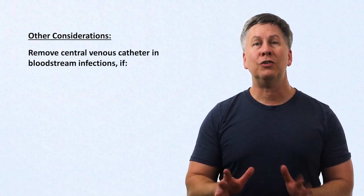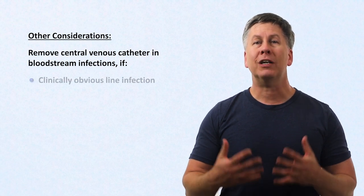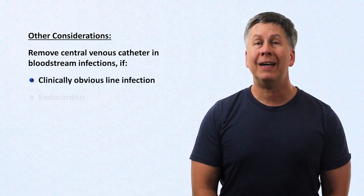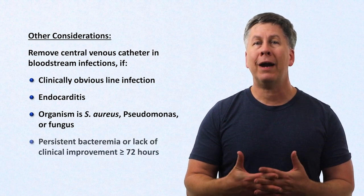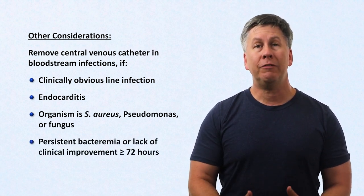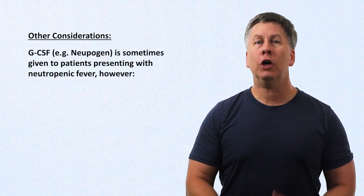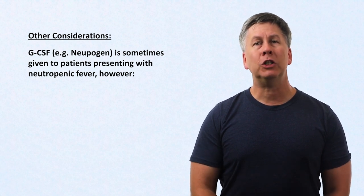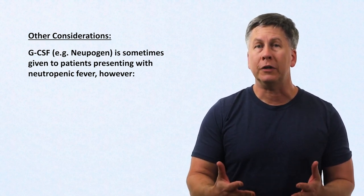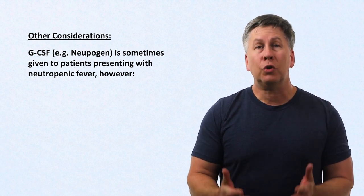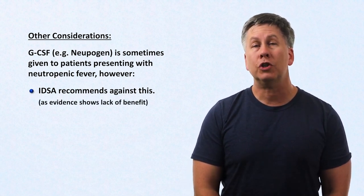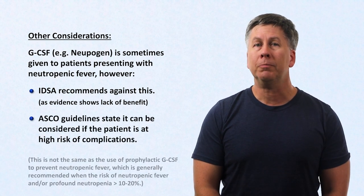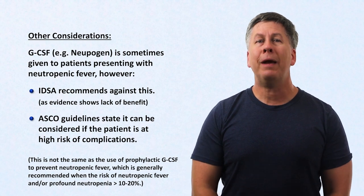There are two final major considerations. First, remove any central venous catheters in the presence of bloodstream infections if there is a clinically obvious line infection, the patient has endocarditis, the organism is Staph aureus, Pseudomonas, or fungus, or if there is persistent bacteremia or lack of clinical improvement after 72 hours. Second, GCSF — also known as Neupogen — is sometimes given to stimulate the bone marrow to produce more neutrophils. Although seemingly logical, the Infectious Diseases Society of America recommends against this due to lack of benefit, while the American Society of Clinical Oncology states it can be considered in high-risk patients.